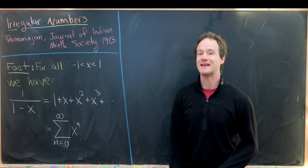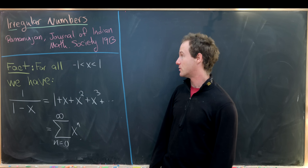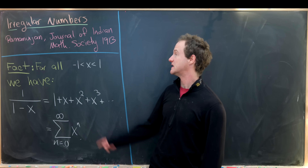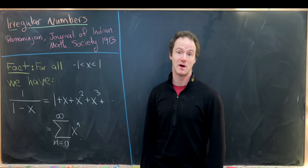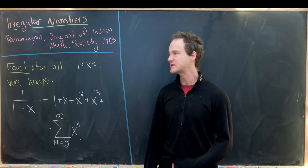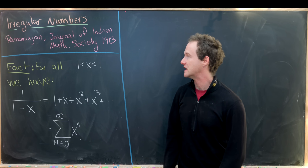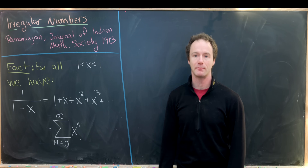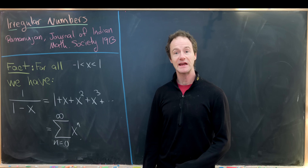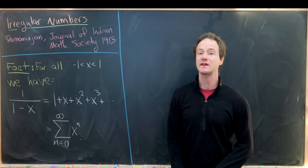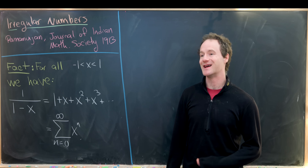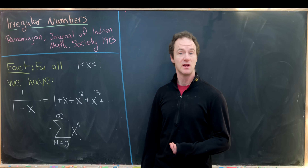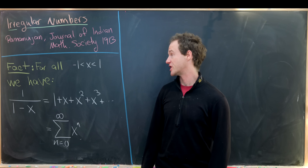The other day I found this very nice, readable paper from the year 1913, written by Ramanujan. It was in the Journal of the Indian Mathematical Society, and it's called Irregular Numbers. It contains some really nice results that I had never seen before, so I'd like to share them.